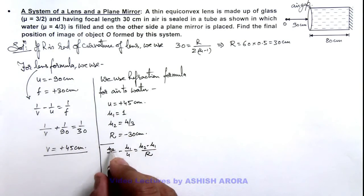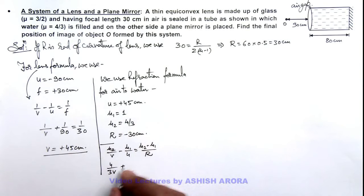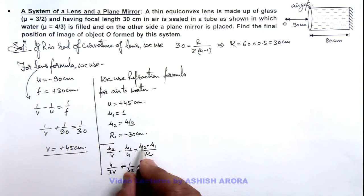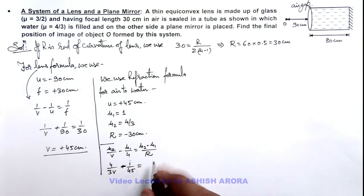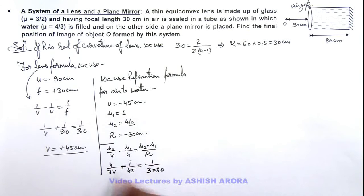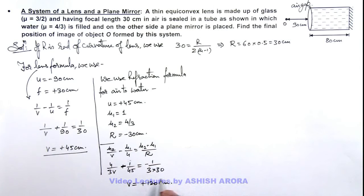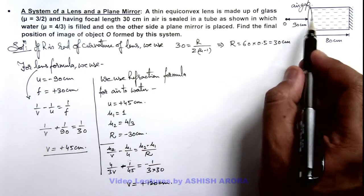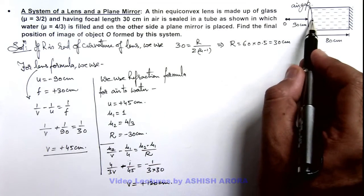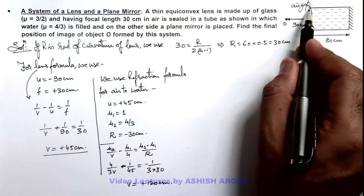Substituting the values: (4/3)/v − (−1/45) = (4/3 − 1)/(−30), which gives (4/3)/v − 1/45 = −1/(3 × 30). On further simplifying, 1/v = 1/45 − 1/90. This gives 1/v = 1/90 × 3/4, so v = +120 centimeter. The image of the object in water is produced at 120 centimeter to the right of this refracting surface, which means it is 40 centimeter to the left of the plane mirror.